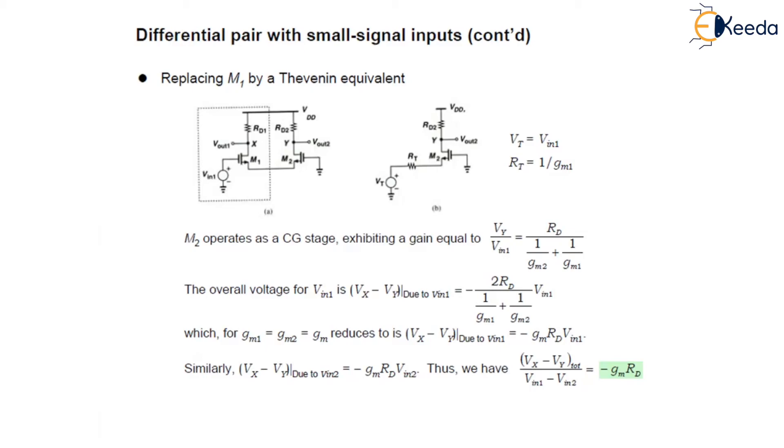The magnitude of the differential gain equals GmRd regardless of how the input is applied, whether the input is applied to only one side or the input is the difference between the two sources. It is important to recognize that if the output is single ended, that is it is sensed between X or Y and ground, the gain is half. So this is the same gain we have arrived at using the small signal analysis of differential pair. Thank you.